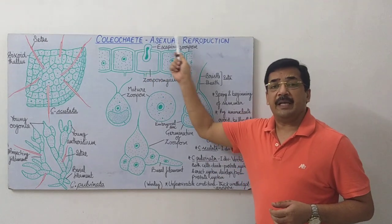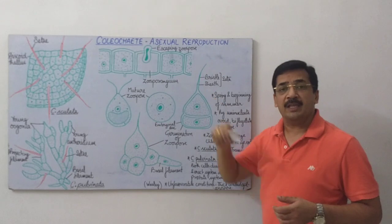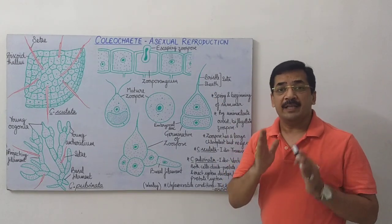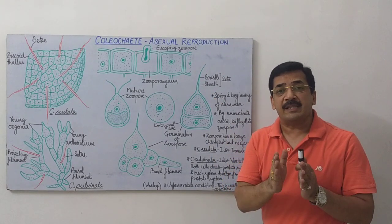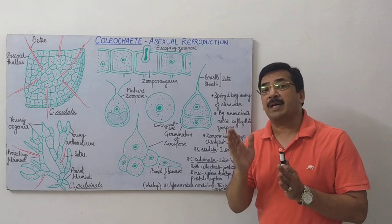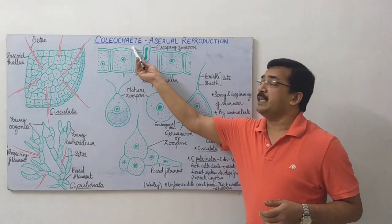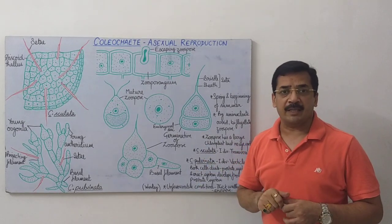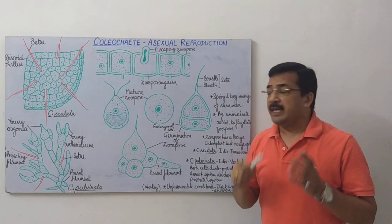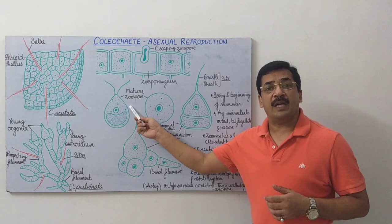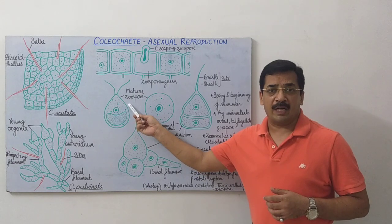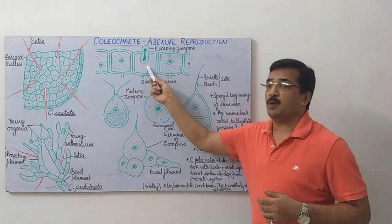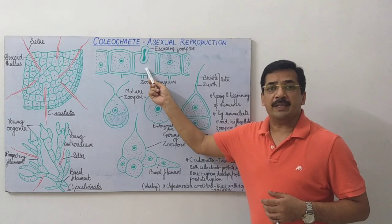Coleochaete mein asexual reproduction favorable conditions mein hota hai, yaani ki spring season mein aur early summer season mein Coleochaete asexual method ke zariye reproduce karna start karta hai. Asexual reproduction flagellate zoospores ke dwara hota hai, aur is zoospore ka formation zoosporangium ke andar hota hai.